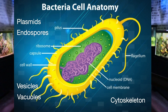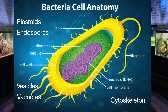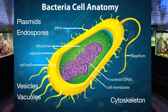Some prokaryotic cells also have plasmids. A plasmid is extra-chromosomal DNA — separate from the chromosome. Plasmids are small circular pieces of DNA that often house special genes, commonly related to antibiotic resistance or exploiting a new food source. Importantly, plasmids are not necessary under normal conditions, and bacterial cells can have one plasmid, multiple plasmids, or different types of plasmids.